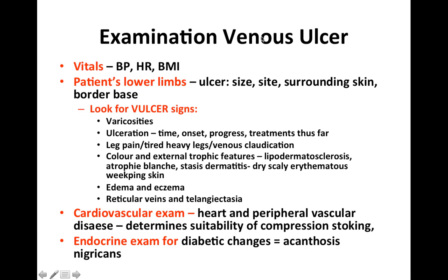On examination, you want to first assess the patient's vitals — blood pressure, heart rate, and BMI — especially BMI because high BMI is associated with venous hypertension. Then assess the patient's lower limbs with a peripheral vascular examination, looking at the ulcer in terms of size, shape, surrounding skin, border, base, and location, and look for the VULSA signs mentioned previously.